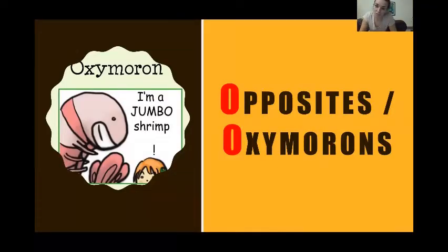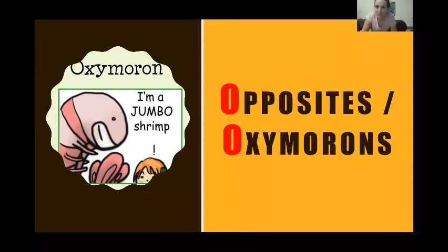O — Opposites or oxymorons. Have a think about things like hot and cold — those are opposites — or big and small. An oxymoron is when you put two words together that make it sound a bit funny, like the cartoon here says 'I'm a jumbo shrimp.' Jumbo means really, really large, but shrimp we think of as something really small. We could say things like 'loud silences' or 'soft rock' — things that don't really go together. They sound really interesting in your poetry.